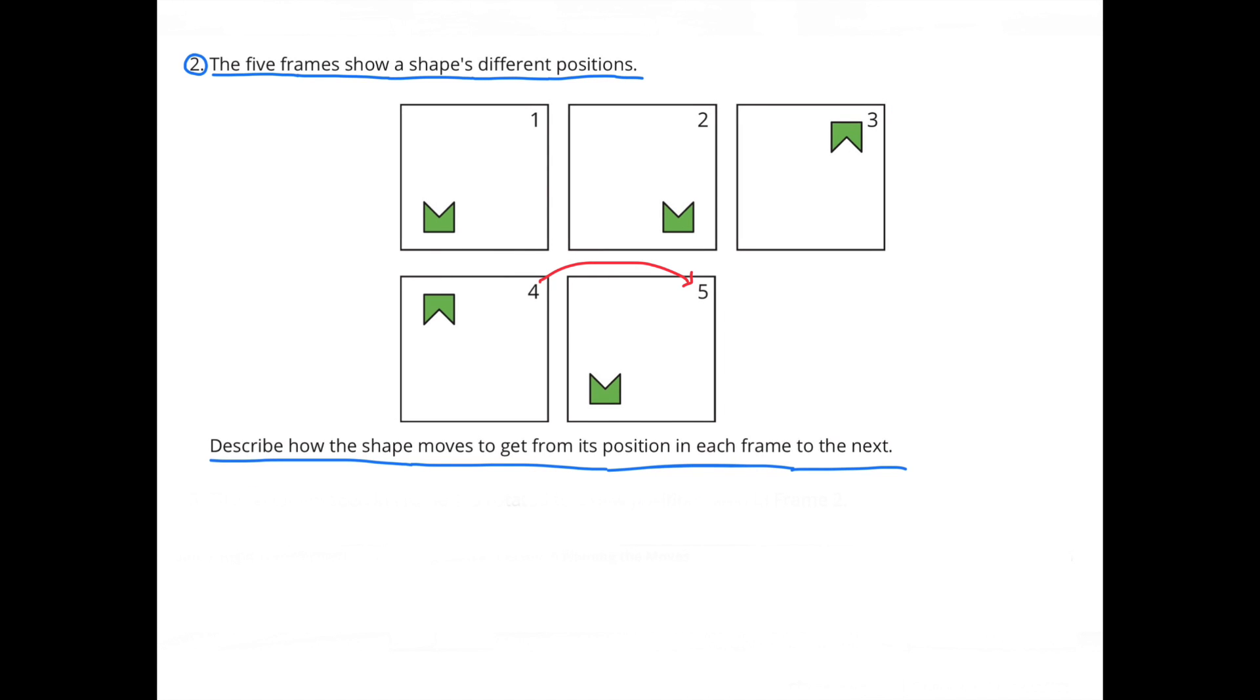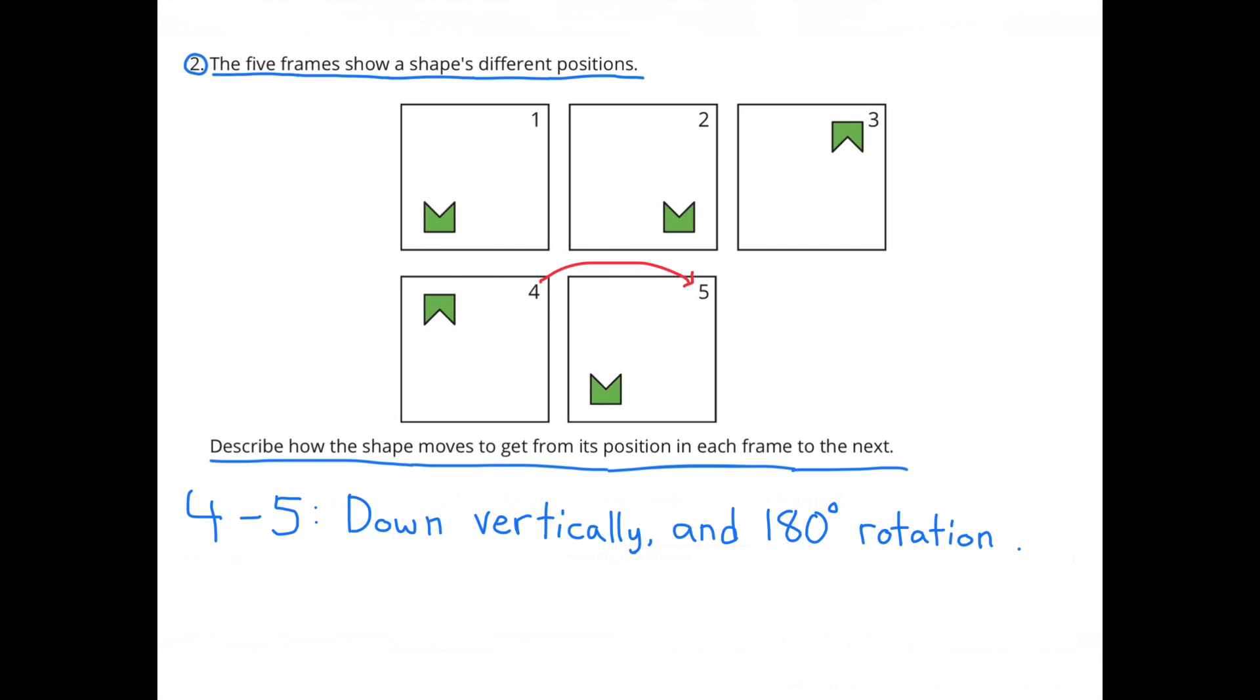And finally, how would you describe the movement of the image from frame 4 to frame 5? Moving from frame 4 to frame 5, the image moved down vertically, and then it rotated 180 degrees.